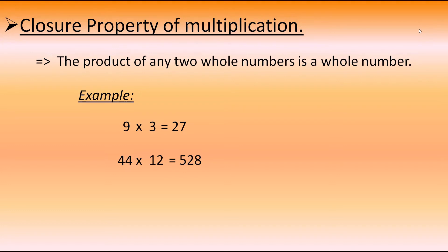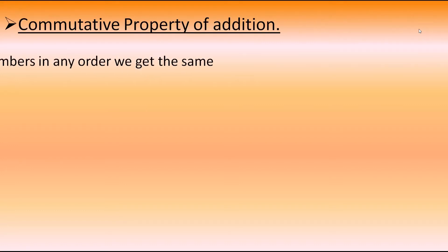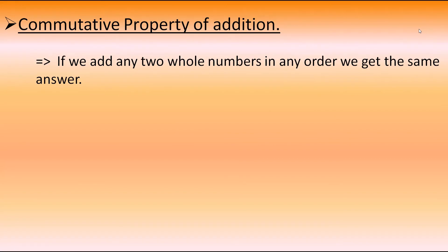Now let's move to the next property: the commutative property of addition and multiplication. First, we will understand the commutative property of addition. It says that if we add any two whole numbers in any order, we get the same answer. Means, if we take two whole numbers and add them, then change the places of those numbers, we still get the same answer. Let's understand this with the help of an example.